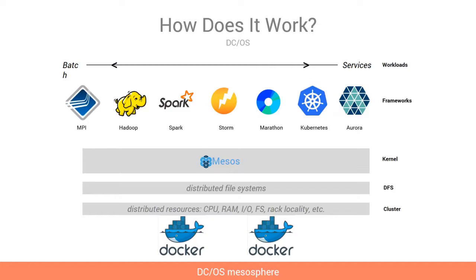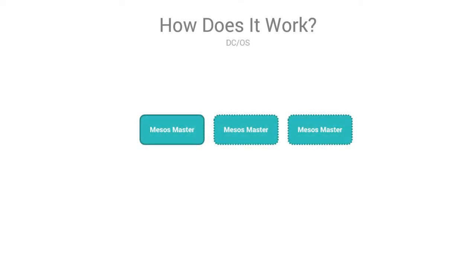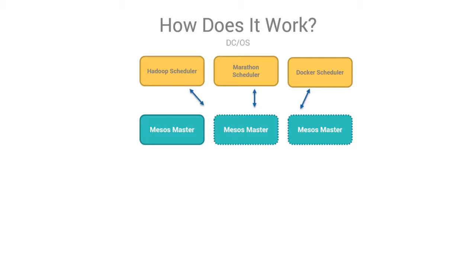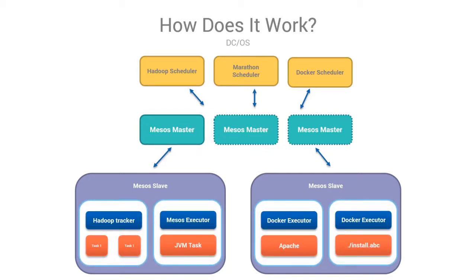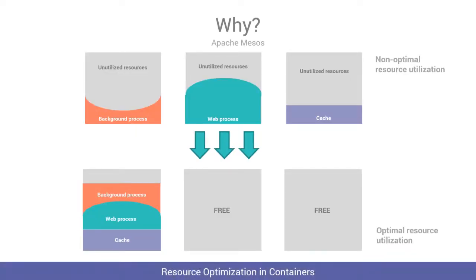And by the way, if any one of those nodes dies, please make sure you move my application to another healthy node so that end users do not experience any disruption. Then, based on the requirement of a particular app, a scheduler can dynamically allocate resources to the application. This will make the whole system much more efficient — freeing up resources, driving utilization up, saving costs, increasing uptime, and reducing administrative overhead.